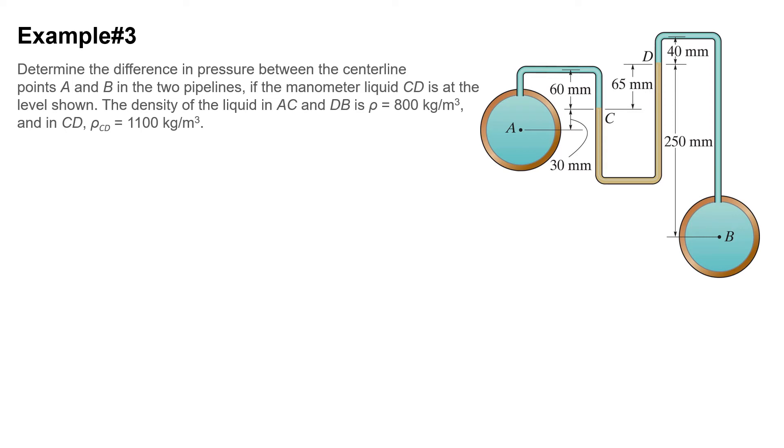We have another cool example, example number three. In this example, we have two pipes. These are cross sections of pipes - that's why they are circular. The flow is moving into the screen, and these two pipes are connected to each other using a manometer. Remember, if the two ends of a manometer is connected to a pipe, that would be a differential manometer.